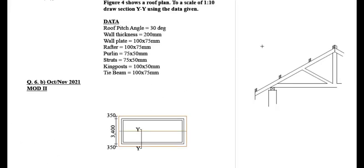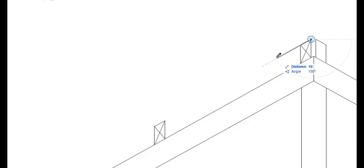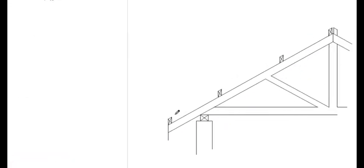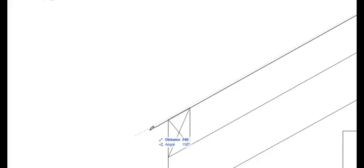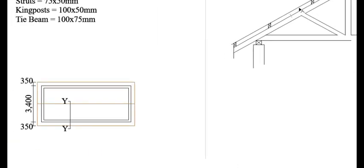The next thing we can do is place our roof covering — we're just going to represent that using a line. So you are just going to draw a line at 30 degrees and join everything down like that. Let me just adjust it a little bit. That is the roof covering; you can also extend it to the other side.